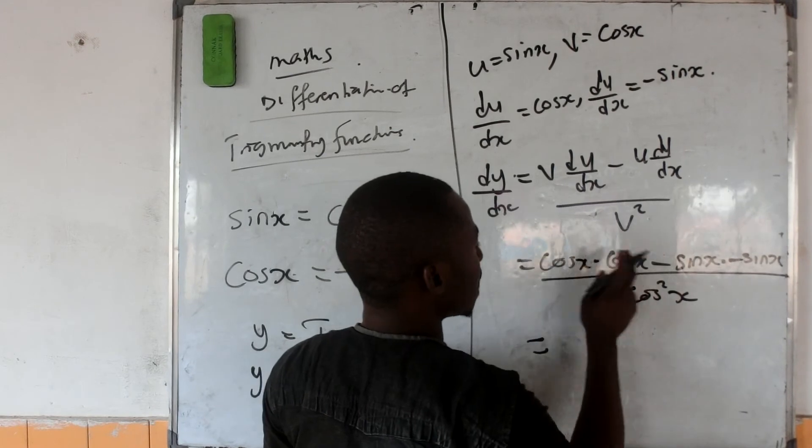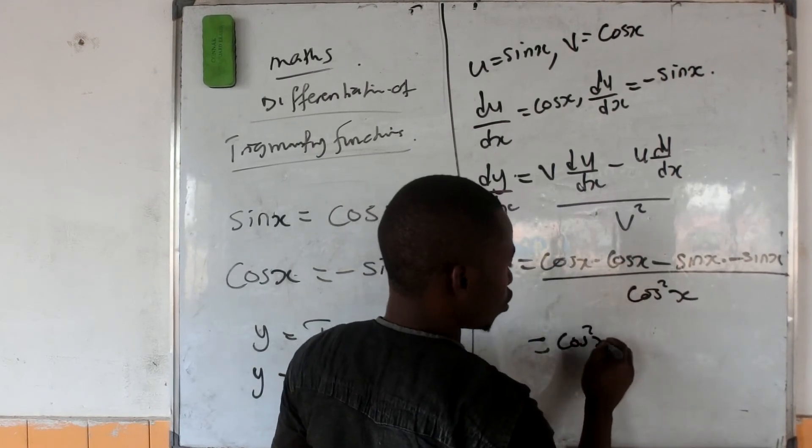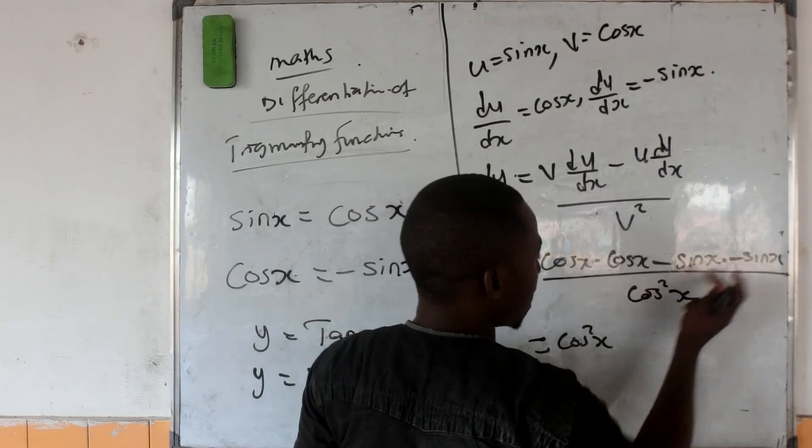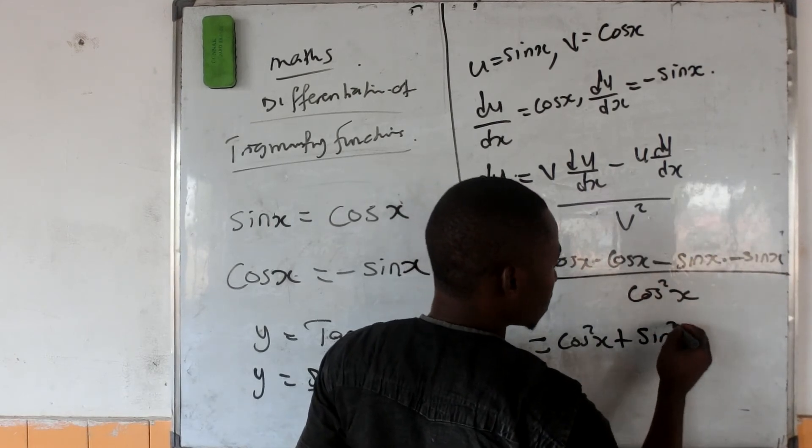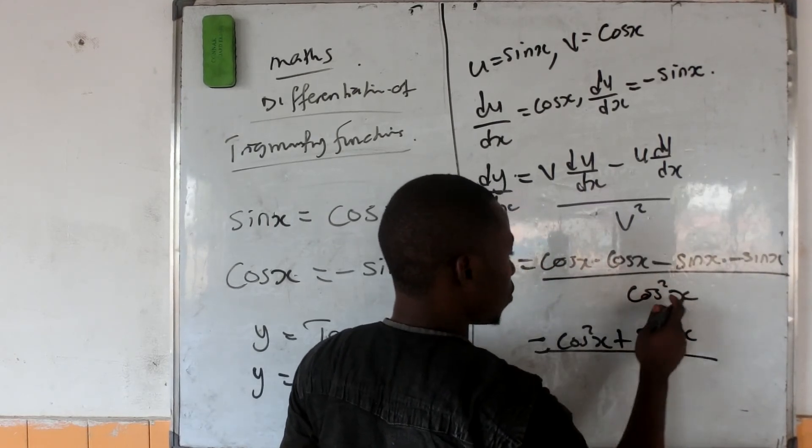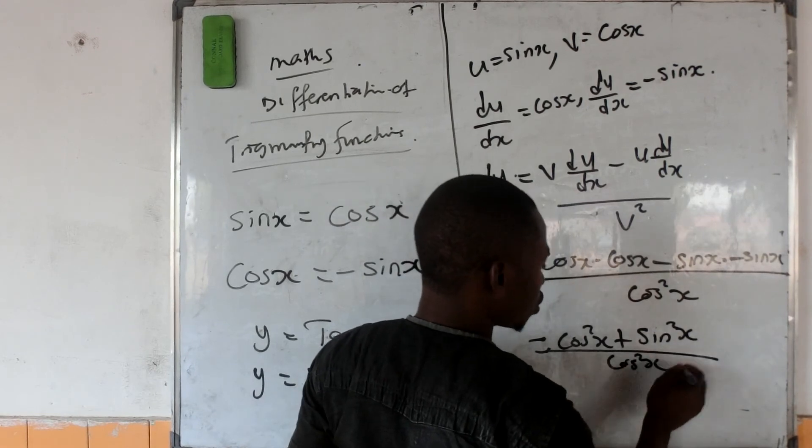This one will be cos x times cos x, cos squared x. This one will be minus times minus, sin x times sin x, which is sin squared x over cos squared x.